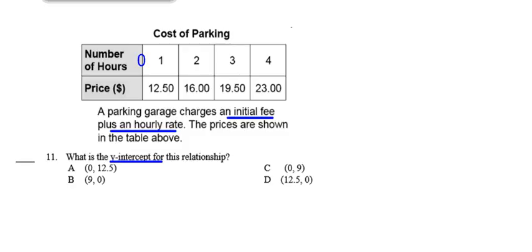Question 11, same table and situation: a parking garage charges an initial fee plus an hourly rate. What is the y-intercept for this relationship? Is it A: (0, 12.5)? B: (9, 0)? C: (0, 9)? Or D: (12.5, 0)?